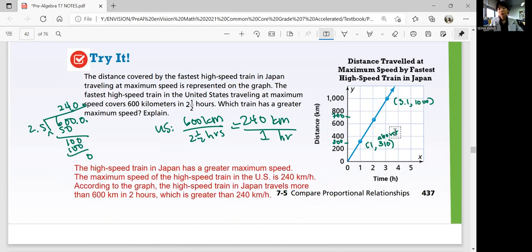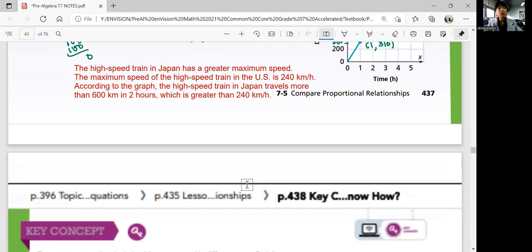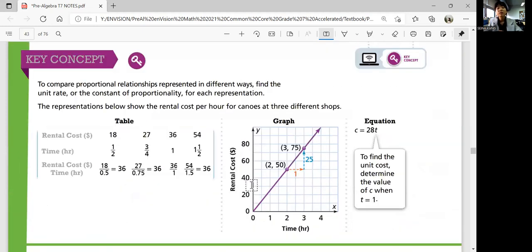So compare the unit rates by graph. And you can now get the unit rate from the equation as well. So use whatever information you have. There are multiple ways to find proportional relationships. So let's summarize our lesson. 7-5 was all about comparing proportional relationships. To compare proportional relationships represented in different ways you find a unit rate or the constant of proportionality for each representation.